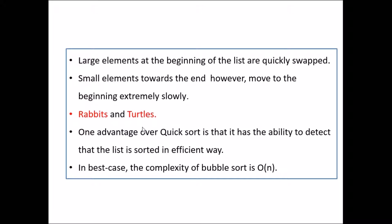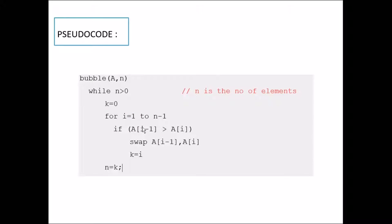One advantage over quick sort is that it has the ability to detect that the list is sorted in an efficient way. Suppose if we give a sorted array to the bubble sort, this pseudocode will detect the array sorted in first iteration only. That is it has the best case of big O of n. If swap function is not used, that is if loop is not used, then k is equal to initial value, that is k is equal to 0. Only when it enters the if loop, then only the value of k is changed. Otherwise it remains as 0.